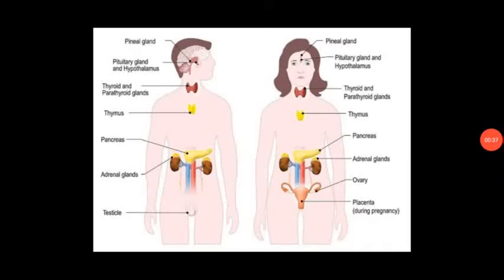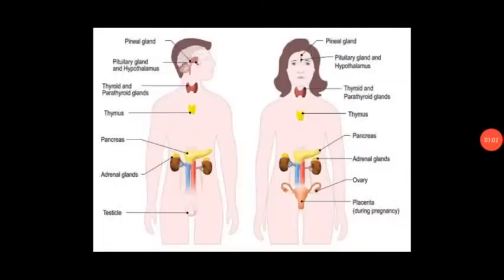Students, in the picture you can see the glands are given. Both male and female have endocrine glands which are responsible for various functions of our body. We will read out all these glands one by one. These endocrine glands secrete hormones, and the hormones are responsible for all the functioning of our body.